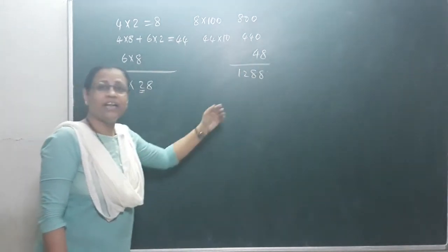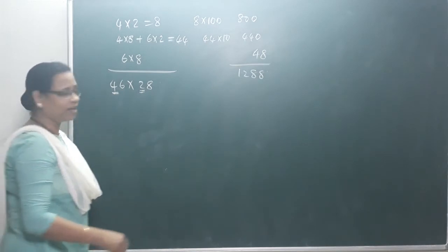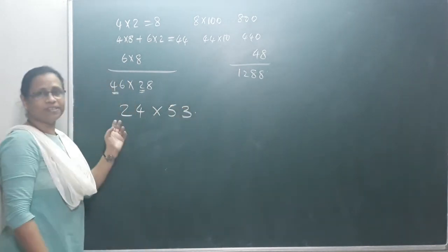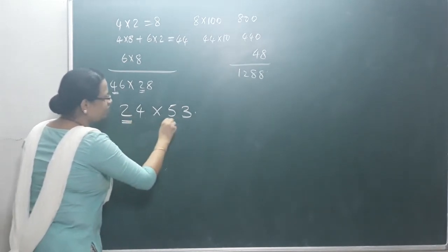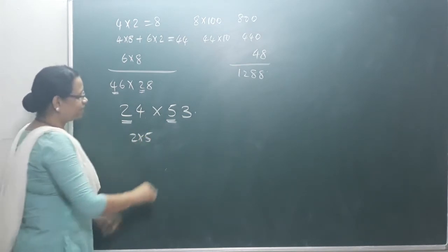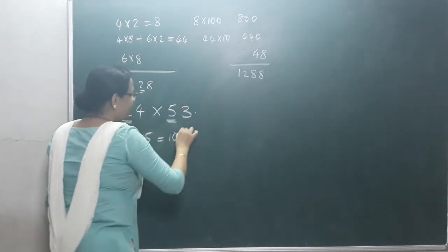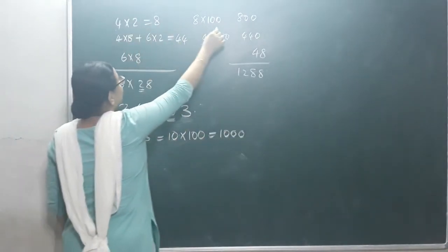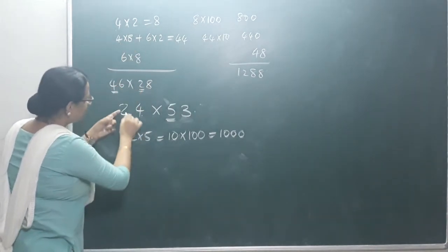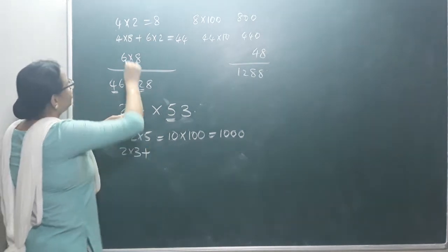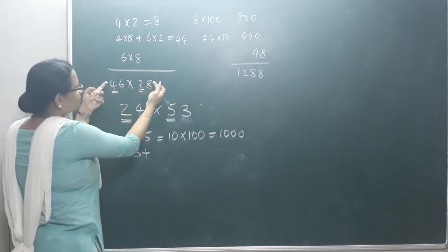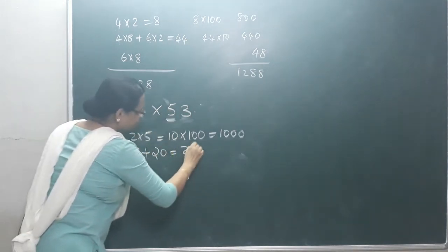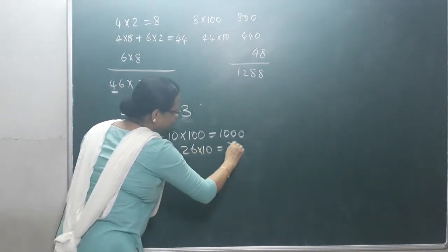That is correct. Now we will take another number: 20 and 4 — what is this? 50 and 3. You multiply these numbers: 2 into 5 is 10, then 10 into 100 gives 1,000. Then 4 into 8 and 2 into 3, plus 6 into 2 and 6 into 5 — that is 20 plus 6 equals 26, and 26 into 10 gives 260.